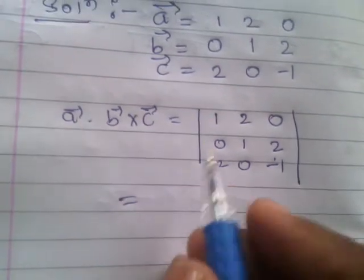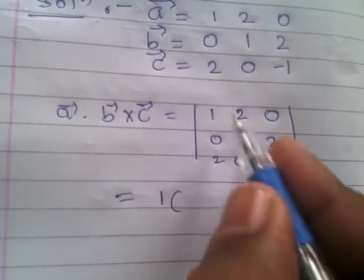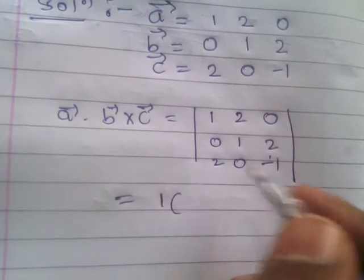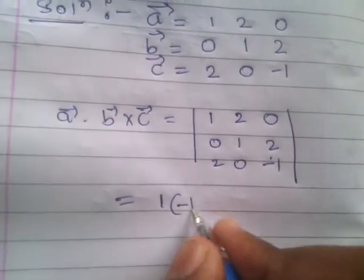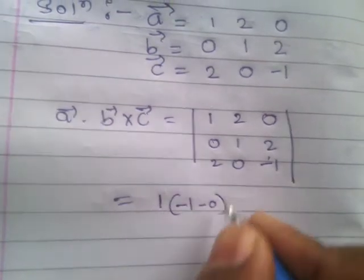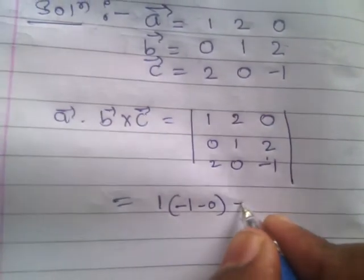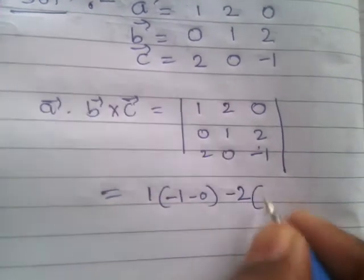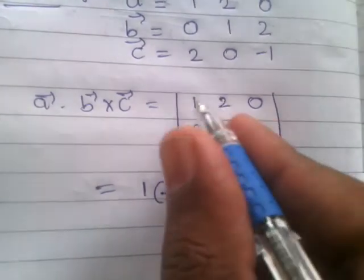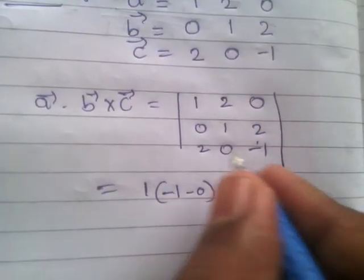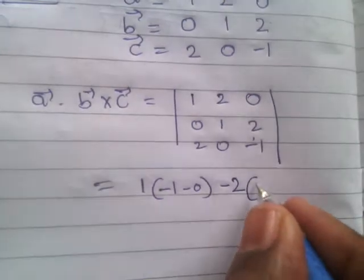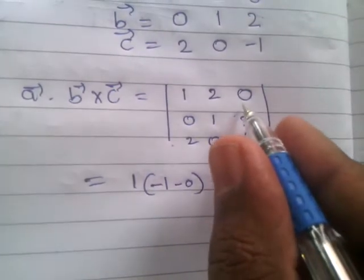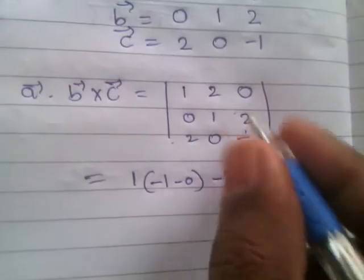Now we find the value. Along the first row: 1 times the minor — leaving that row and column — gives minus 1 into 1 minus 1, which is minus 1, minus 2 into 0. Then minus 2 times its minor: leaving that column and row gives 0 minus 4, that is minus 4. And 0 times anything is 0, so we leave that term.